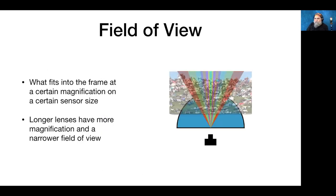Field of view is what fits into the frame at a certain magnification and sensor size. Larger focal lengths have more magnification and a narrower field of view. So the center section might be like a 200mm lens, 150mm in purple, 135mm in orange, working out to maybe a 24mm at the extremes. All the lens is doing is making the scene narrower or wider according to the focal length.